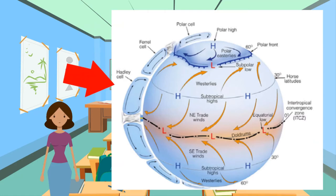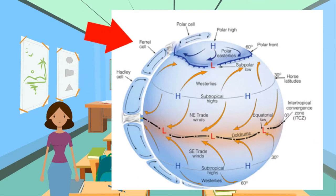1. The Hadley Cell: at the equator, hot moist air rises, moves to higher latitudes above 30 degrees, and sinks. 2. The Ferrell Cell: at around 60 degrees on either side of the equator, moist air rises and travels to lower latitudes at around 30 degrees, where it sinks along with air traveling from the equator.